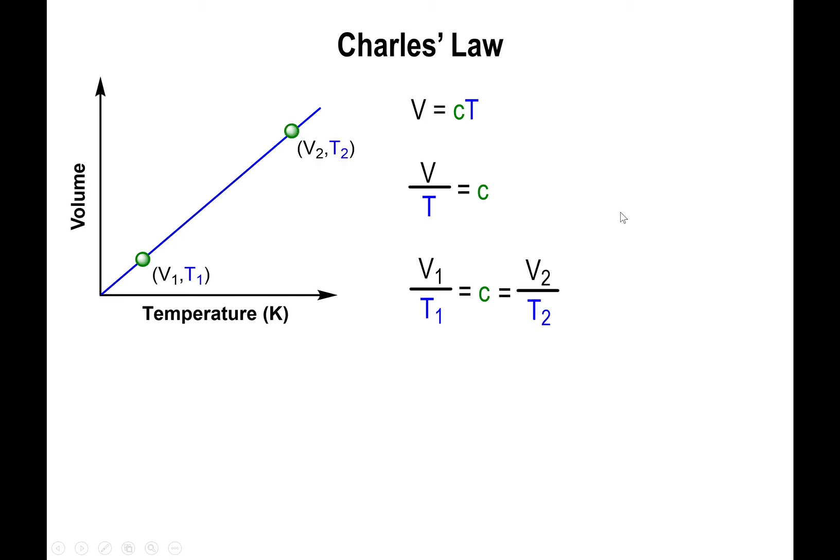Choose any data point on the line, V1 and T1; that ratio has to equal the slope. If you choose a different data set, V2 and T2, as long as you divide V by T, you end up with the same slope. This means V1 over T1 equals V2 over T2. This is known as Charles's Law, and it applies if and only if the pressure is constant and the number of moles of gas hasn't changed.